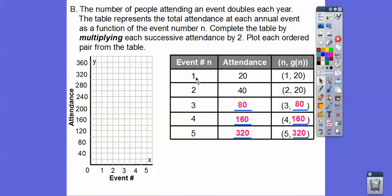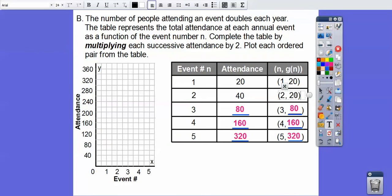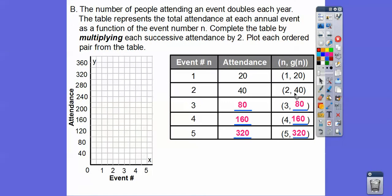We graph 1,20 — each square is 20 — then over 2 up 40, over 3 up 80, over 4 up 160. This doesn't look like a straight line — this is what's called an exponential graph, when it makes a J-shaped curve.